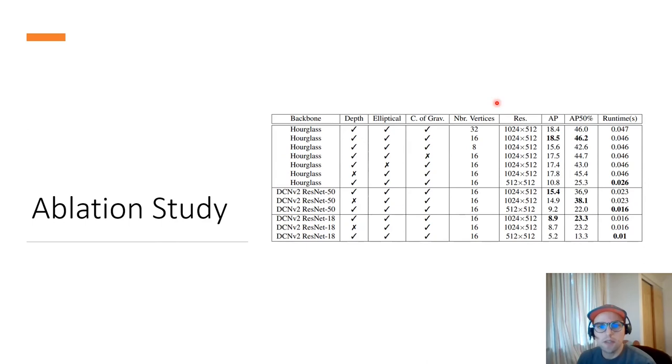So in this ablation study, we first tested the number of vertices. We ended up using 16 vertices for the main results due to the fact that the AP no longer increased. We also tested some implementation choices. Mainly we used the center of gravity of the mask rather than the center of the bounding boxes to produce the center heatmaps, and we used elliptical Gaussians which are the form of the aspect ratio of the mask rather than using circular Gaussians like in CenterNet.